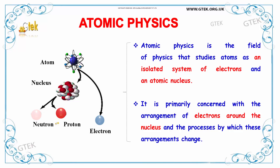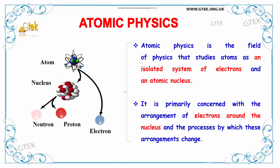This nucleus will have the neutron and proton. It is primarily concerned with the arrangement of electrons around the nucleus and the processes by which these arrangements are changed.